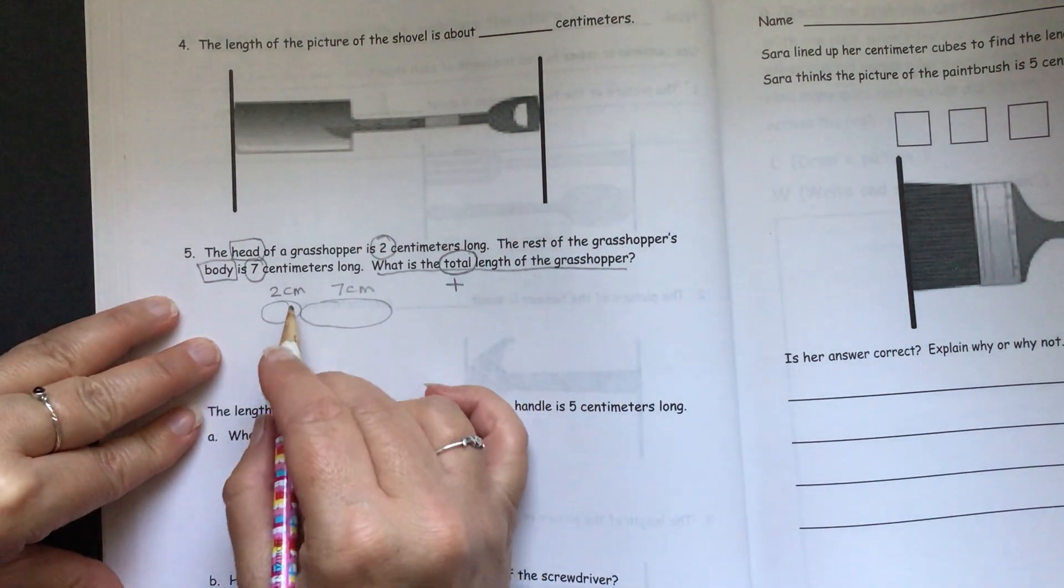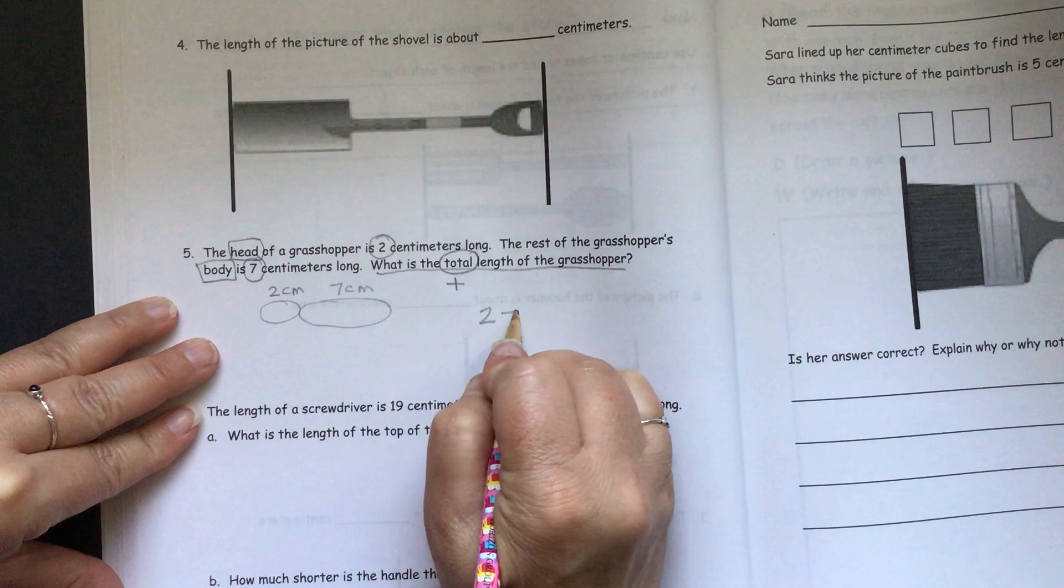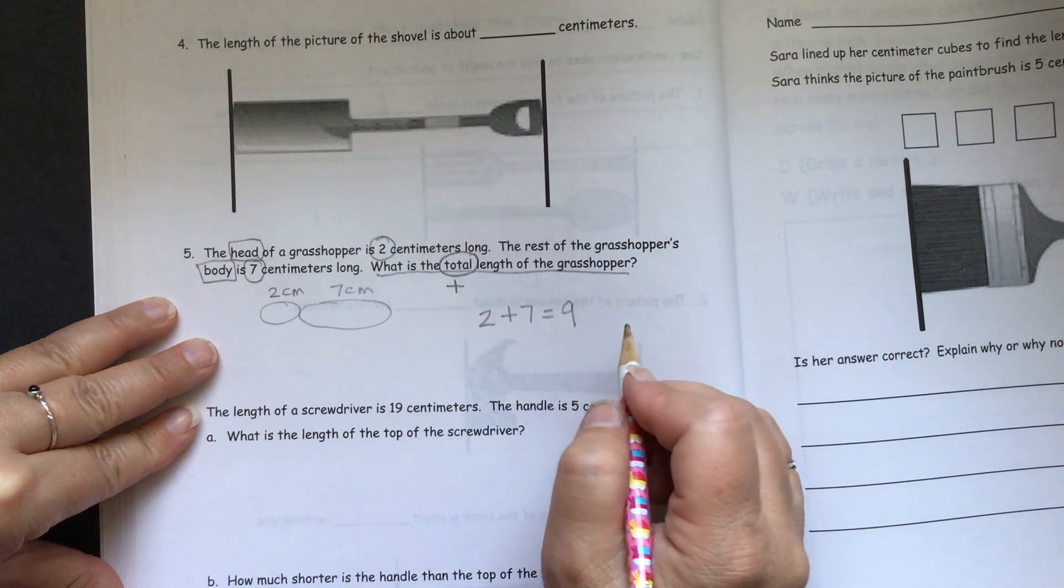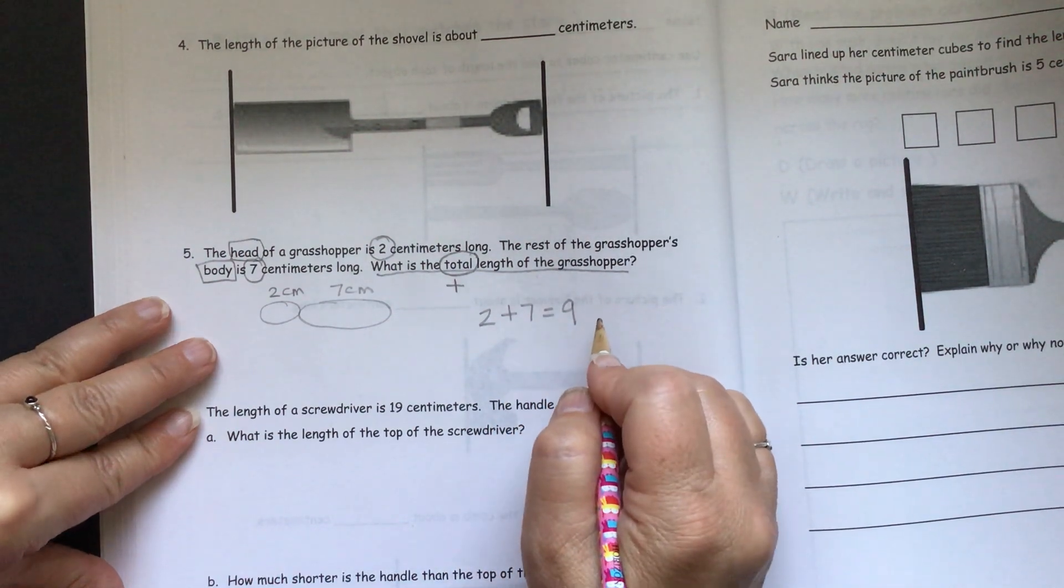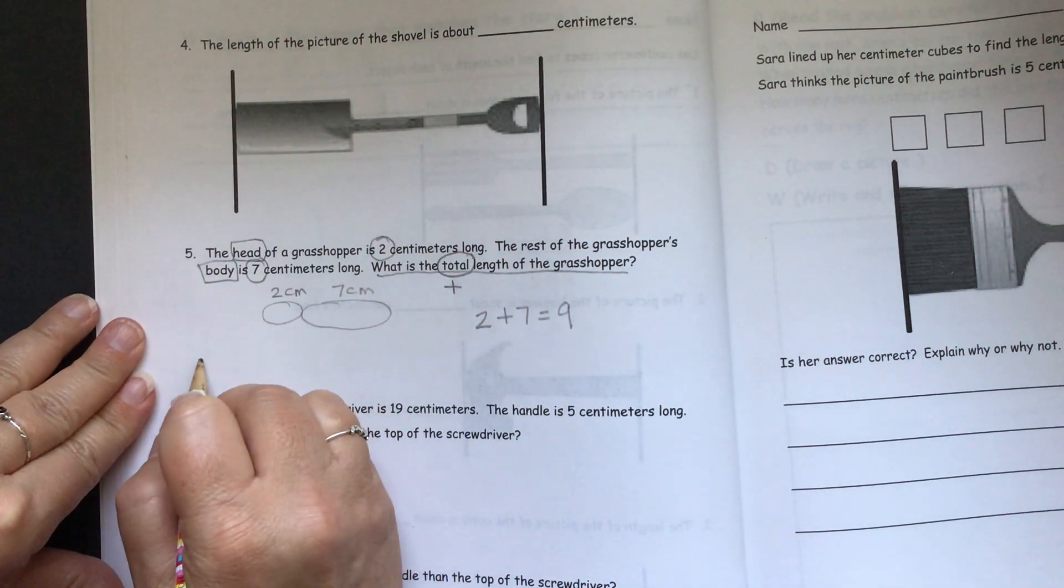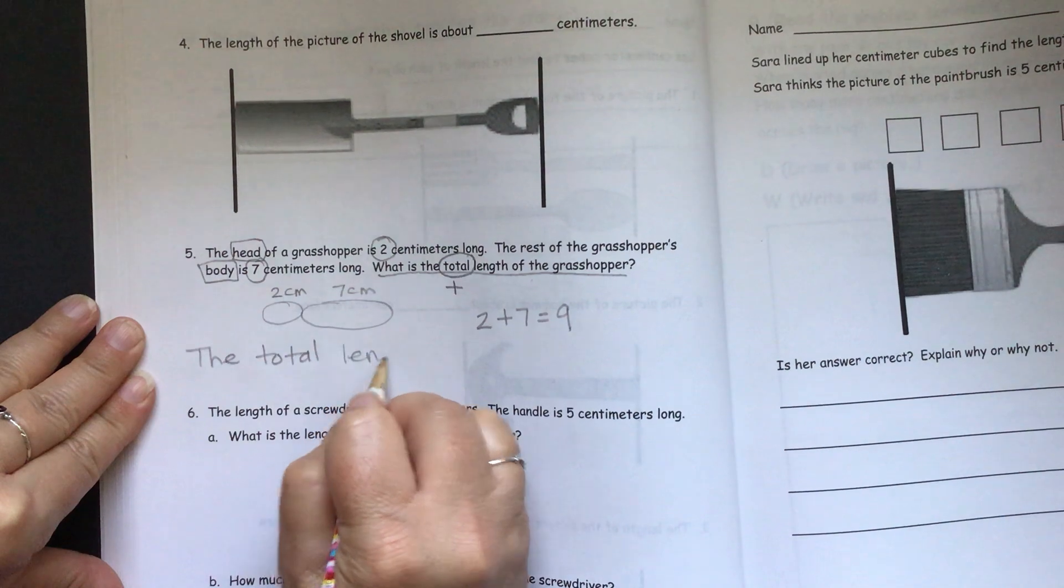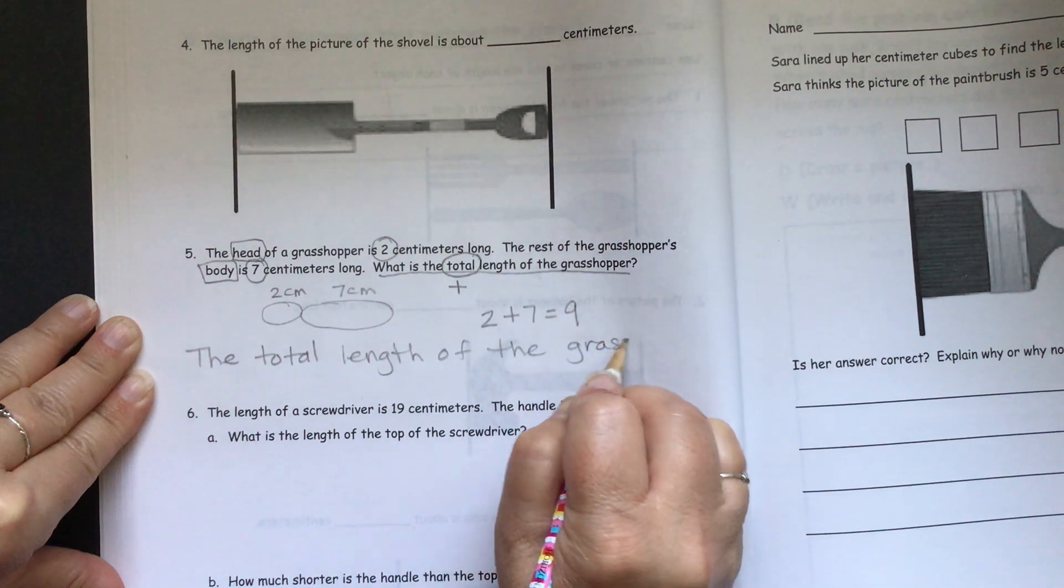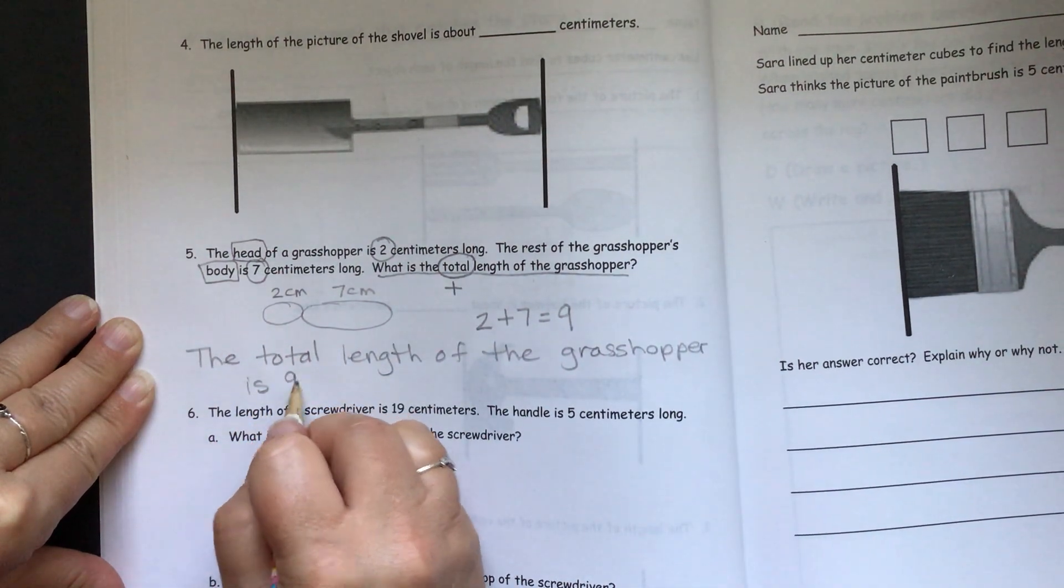So we just need to add two centimeters plus seven centimeters. So we can write our equation. Two plus seven equals nine. And we're using centimeters. So we could have written two cm plus seven cm equals nine cm. That would have been proper. We need to write our sentence to answer our question. The total length of the grasshopper is nine cm.